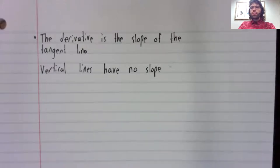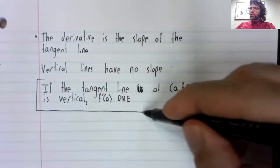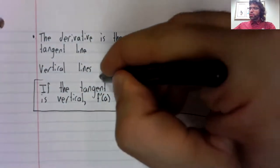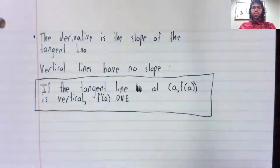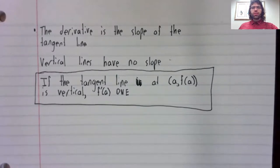Therefore, if the tangent line is vertical at a point, the derivative does not exist at that point.